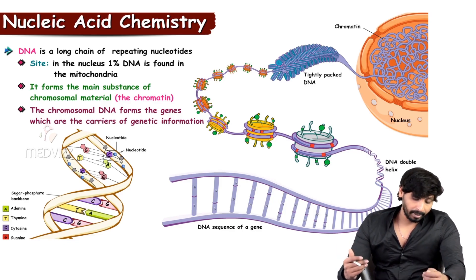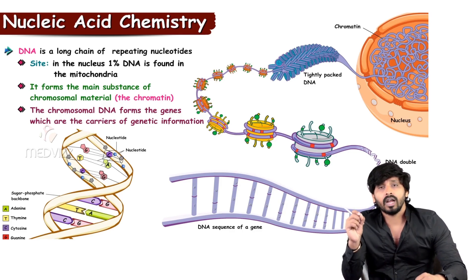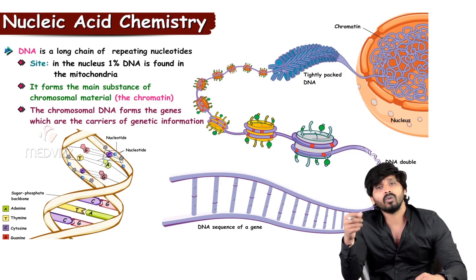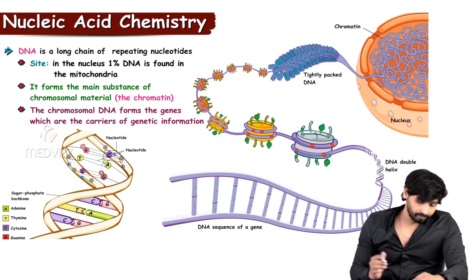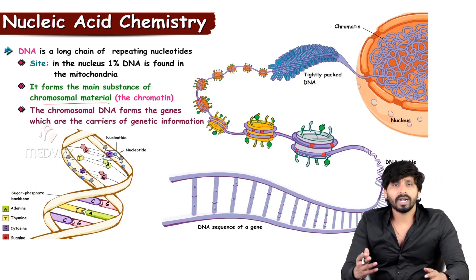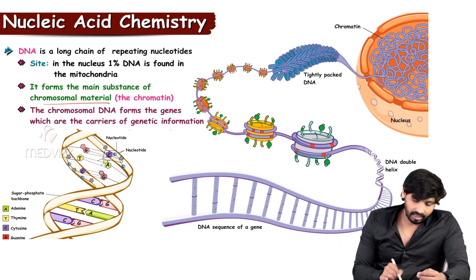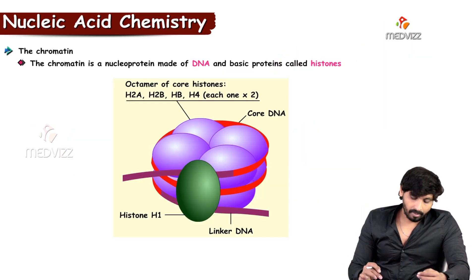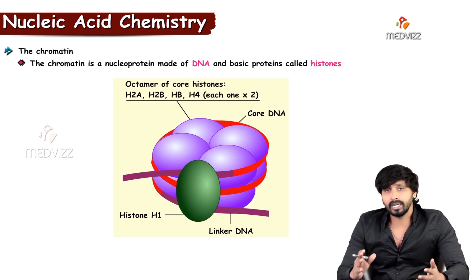DNA is a long chain of repeating nucleotides. Most of the DNA is found in the nucleus, and about one percent of the DNA is found in the mitochondria — that is known as mitochondrial DNA. The main substance of chromosomal material is chromatin, which is again made up of DNA and proteins. The chromosomal DNA forms the genes, which carry the genetic information. Histones play a major role in giving stability to the DNA.